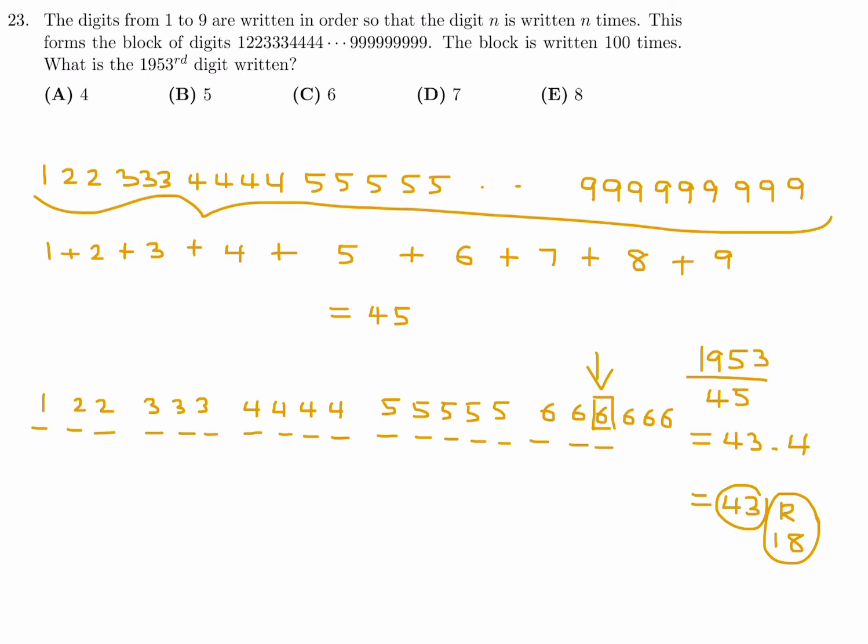So the 1953rd digit would be the 6. So number 23, the answer is C.